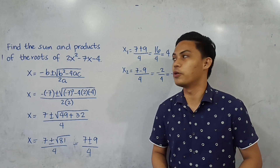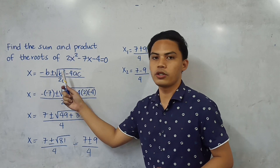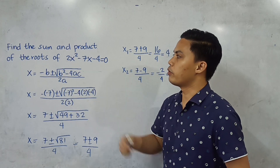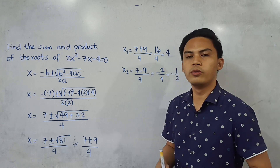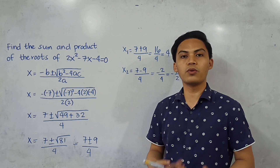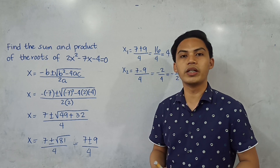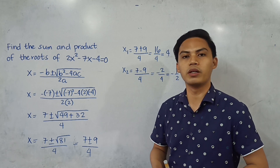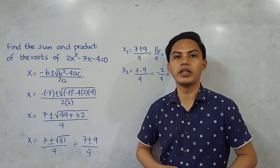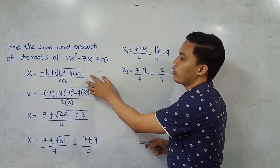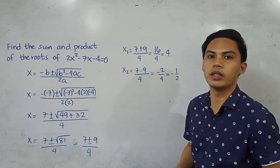I have here our first example. Find the sum and product of the roots of 2x squared minus 7x minus 4 is equal to 0. Typically, we can only get the sum and product once we have already determined the roots. In this case, we can use the quadratic formula to get the roots of the given quadratic equation.